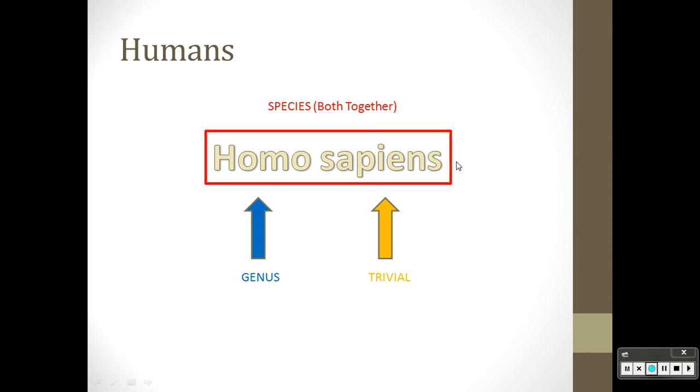I like to call this one descriptive name or common name. When you're writing the scientific notation or using a binomial system, it needs to be underlined or italicized, and your genus name has to be capitalized. The trivial name is lowercase.